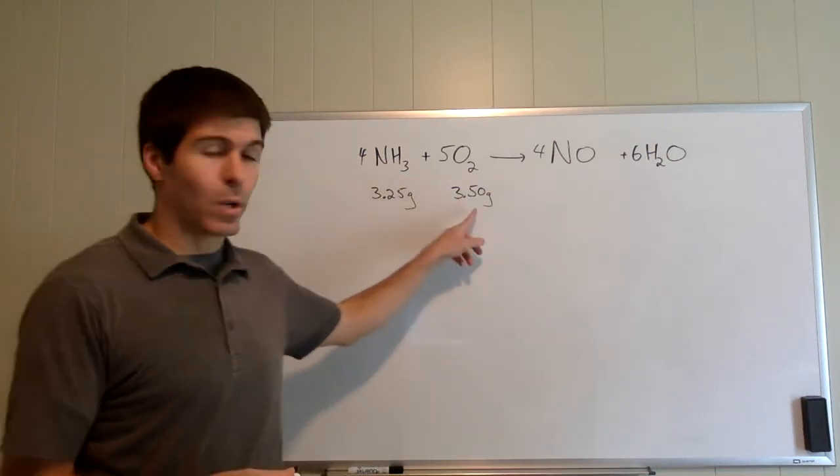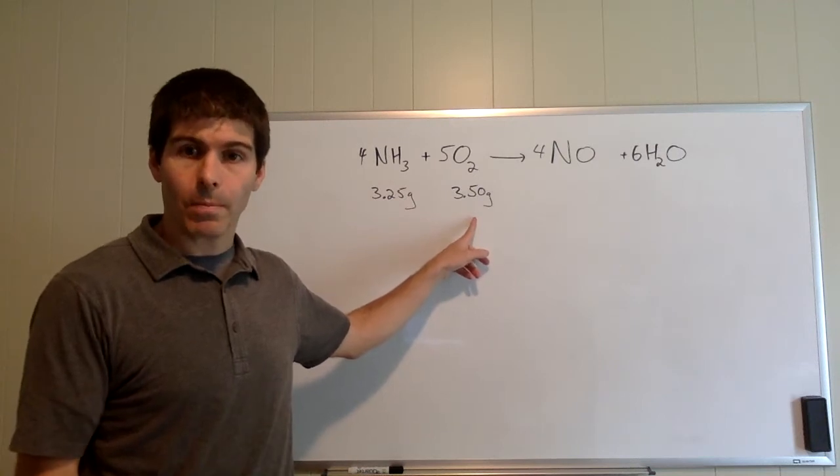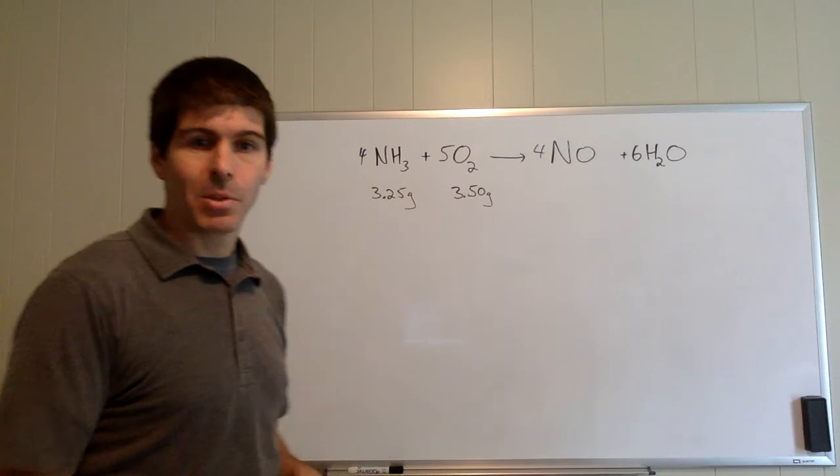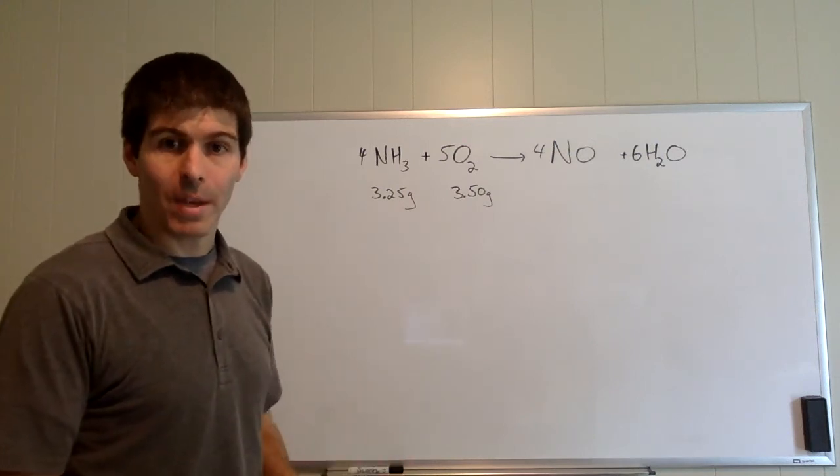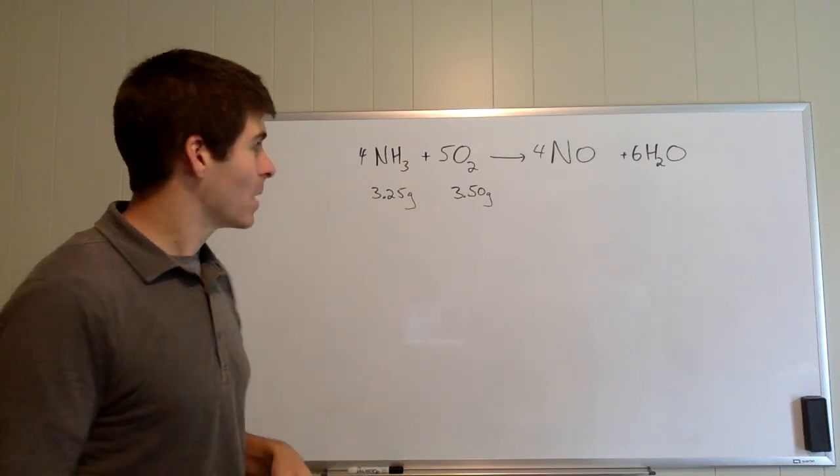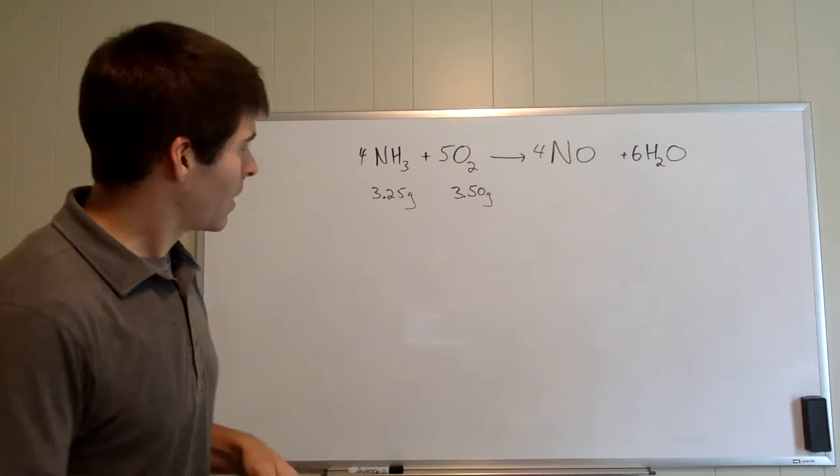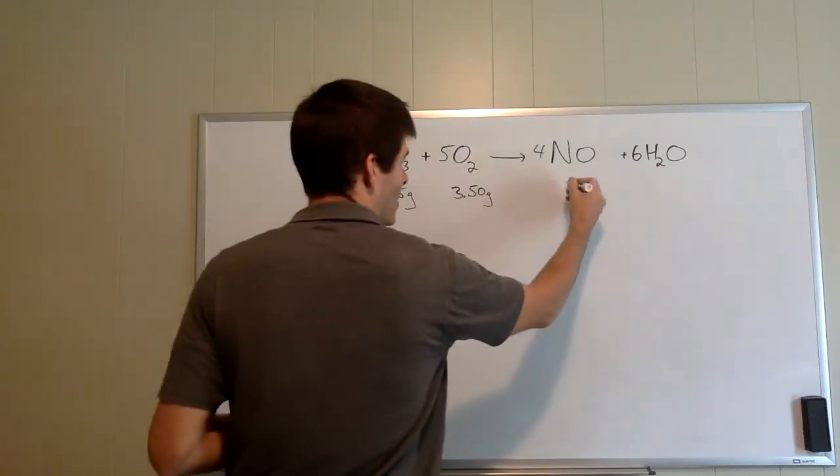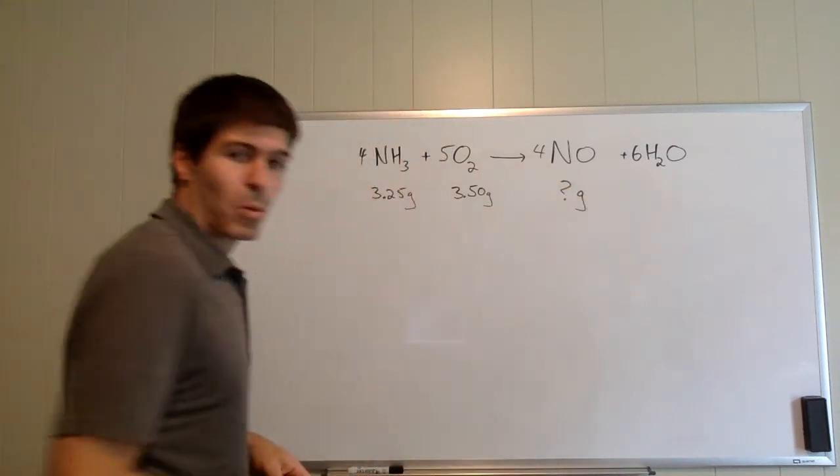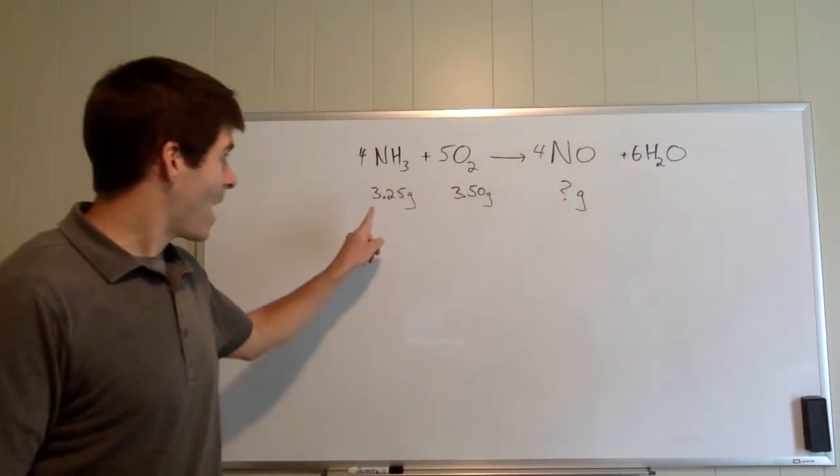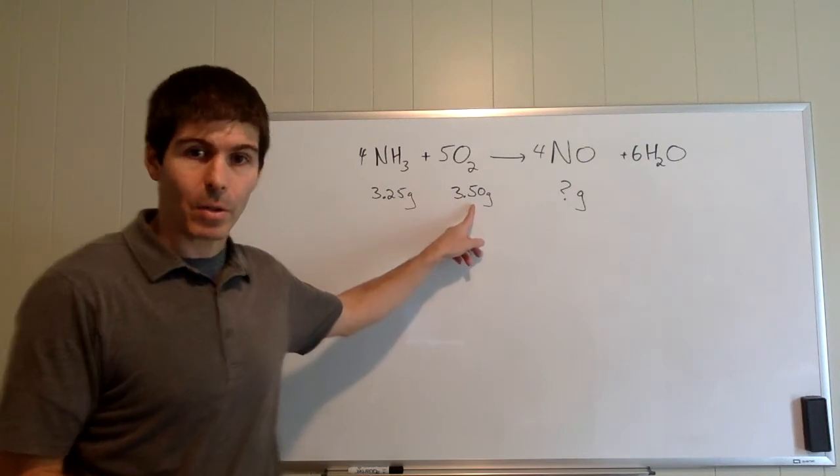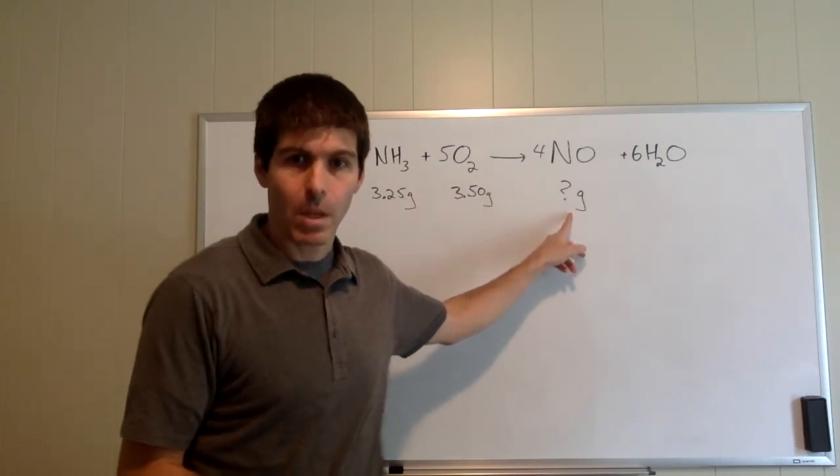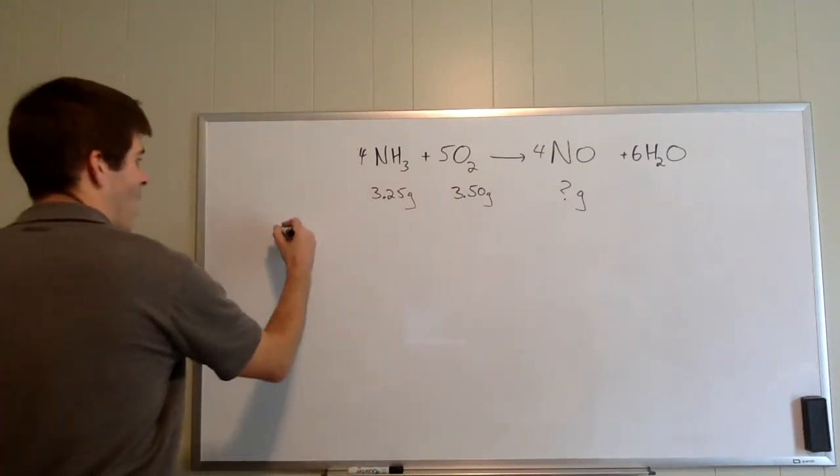Now one of these is going to make more than the other. One of these has the potential to make less, so our job is to find out which one of them makes less. Typically you get a problem that reads this way: if I have this much of each of these chemicals, how much nitrogen monoxide can I make? So the first question is how much.